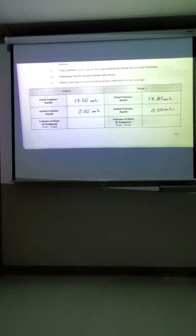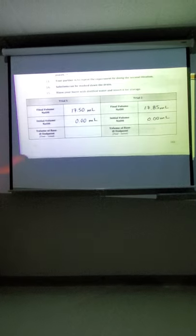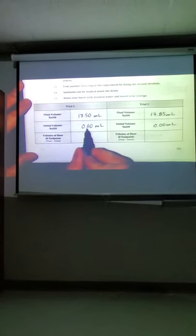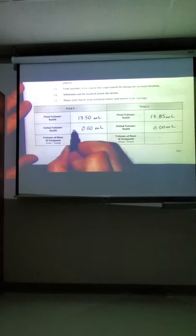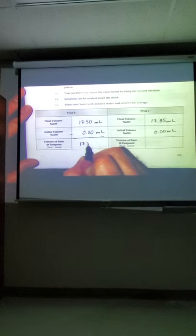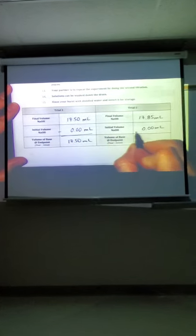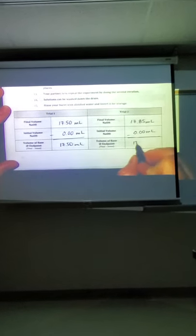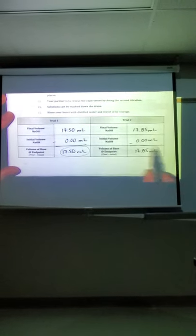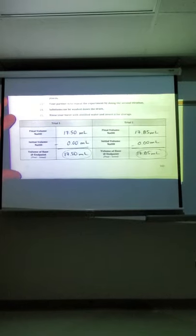Alright, favorite of all the students, time for the number crunching. Not all burettes are 25 mils, so not always will the initial be zero. But for us, since we refilled it was. So in this case, we're just going to subtract and get 17.50 milliliters and 17.85 milliliters. Those are the two numbers that we need to take to the next page.